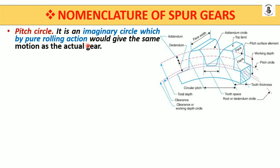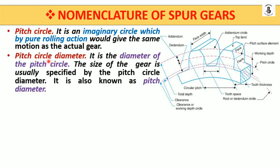After the pitch circle, the pitch circle diameter is the diameter of the pitch circle. The points passing through and making that circle give us the pitch circle diameter. The size of the gear is usually specified by the pitch circle diameter — that is one of the important terminologies used in gear study.